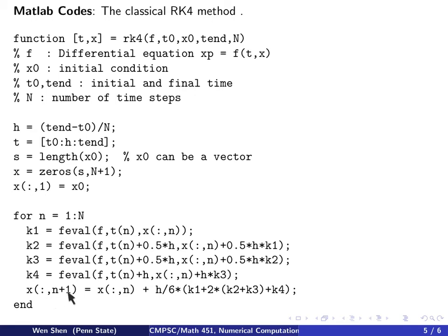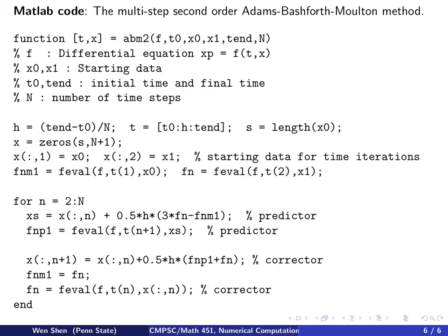And then you update the x value, the column vector at m plus 1 is the previous column vector x, plus this update you do, and then here the k1, k2, k3, k4, they are all column vectors with the same length as the x0.